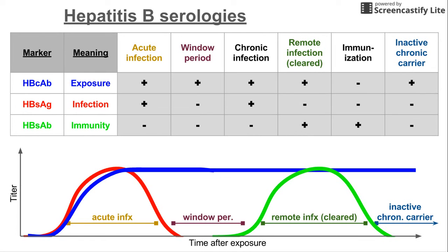For chronic infection, somebody who has been chronically infected has been exposed, so the core antibody is positive. They have been infected and still are infected, so the surface antigen is positive. But they are not immune — the body was not able to clear the virus, so the surface antibody is negative.